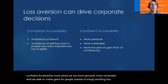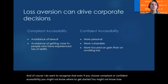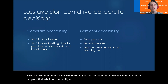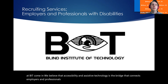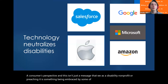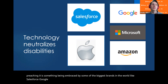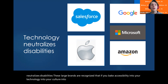Even if you choose compliant or confident accessibility, you might not know where to get started or how to tap into the people with disabilities community as resources and talent. That is where organizations like BIT come in. We believe that accessibility and assistive technology is the bridge that connects employers and professionals with disabilities — both from an employment and a consumer perspective. This isn't just a message from a disability nonprofit; it is something being embraced by some of the biggest brands in the world like Salesforce, Google, Apple, Microsoft, and Amazon, because technology neutralizes disabilities.